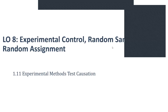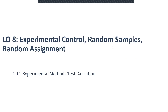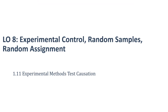Hello, Psych 101 students. We are up to Learning Objective 8 in Module 1, and we are going to continue to talk about experiments. In particular, we have three major topics in this learning objective: experimental control, random samples, and random assignment. Let's get into it.